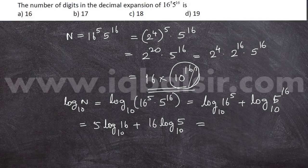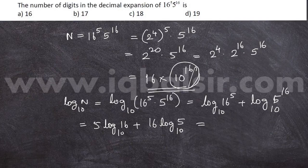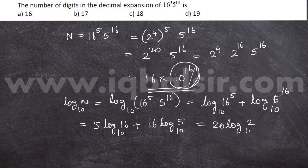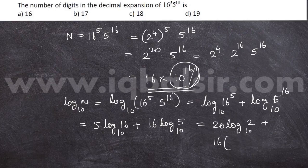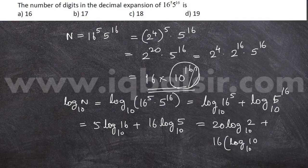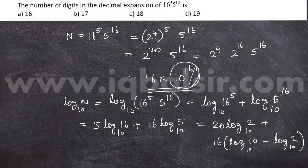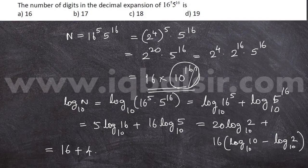The 16 can be written as 2 raised to 4. So that is 20 log 2 to the base 10 plus 16 into log 5 to the base 10 can be written as log 10 to the base 10 minus log 2 to the base 10. This expression finally becomes 16 plus 4 log 2 to the base 10.